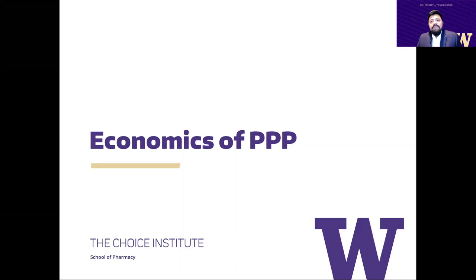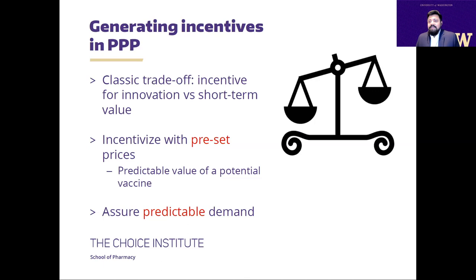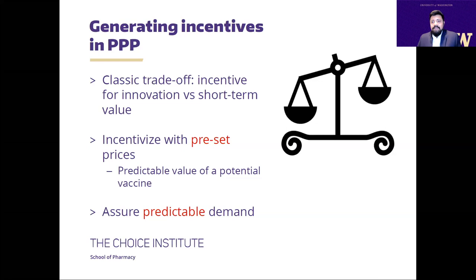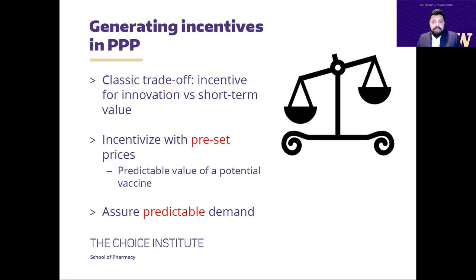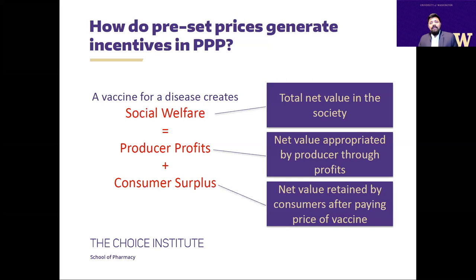So how does an effective public-private partnership look? The key feature driving an effective partnership is the classic tradeoff in health economics: how to provide sufficient incentive for innovation while also generating sufficient value in the short run. Economic theory says that in the case of vaccines, one important feature to achieve this tradeoff is to pre-set prices instead of trying to negotiate prices after a vaccine is developed. This is achievable because the value of vaccines of different efficacy can often be predicted, and we should be able to assure predictable demand through procurement targets.